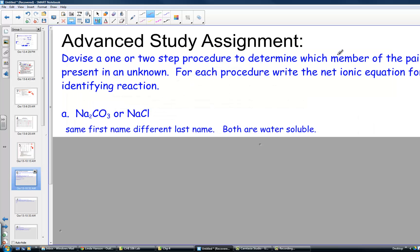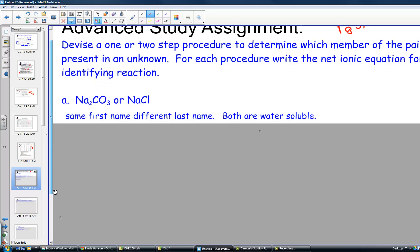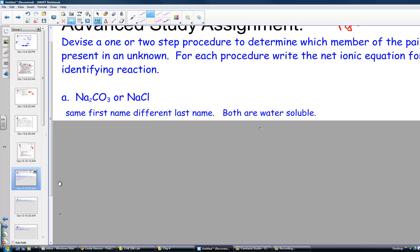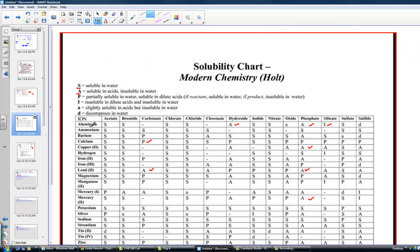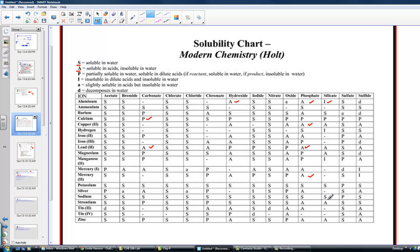At this point, let's practice some together. The advanced study assignment. We're going to be filling in page 31 together and talk about what would be some possible tests to distinguish one salt over the other. Letter A has us deciding between sodium carbonate and sodium chloride. They have the same first name, so the chemical test cannot exploit the difference in first name, but it can exploit the difference in last name. I check my solubility tables and realize that if the first name is a sodium ion, they're always soluble. They're both water soluble.